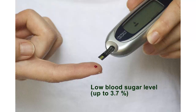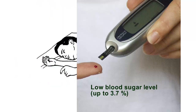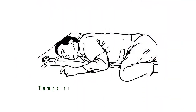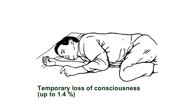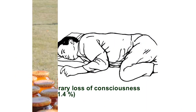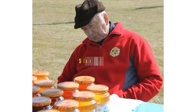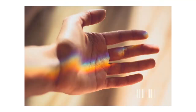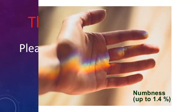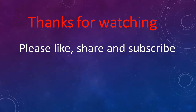Low blood sugar level: up to 3.7%. Temporary loss of consciousness: up to 1.4%. Sleepiness: up to 4.3%. Numbness: up to 1.4% to up to 11.4%.